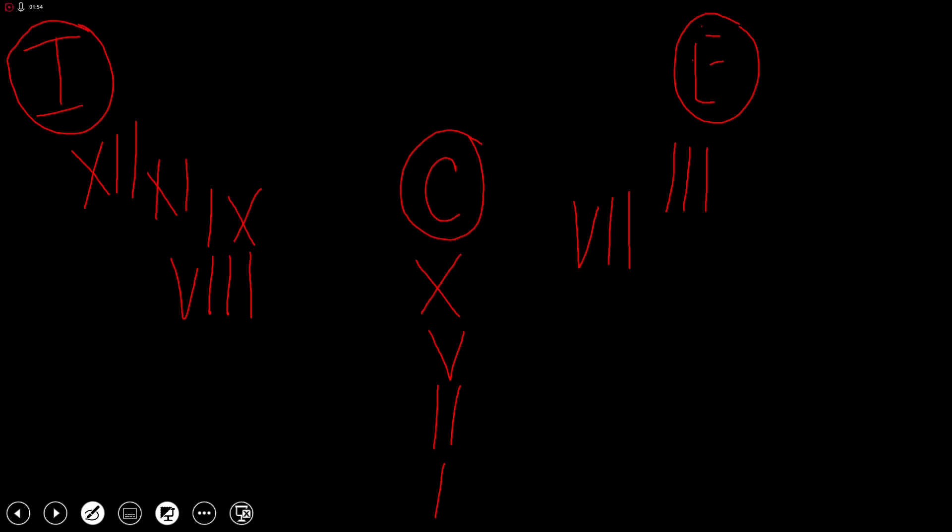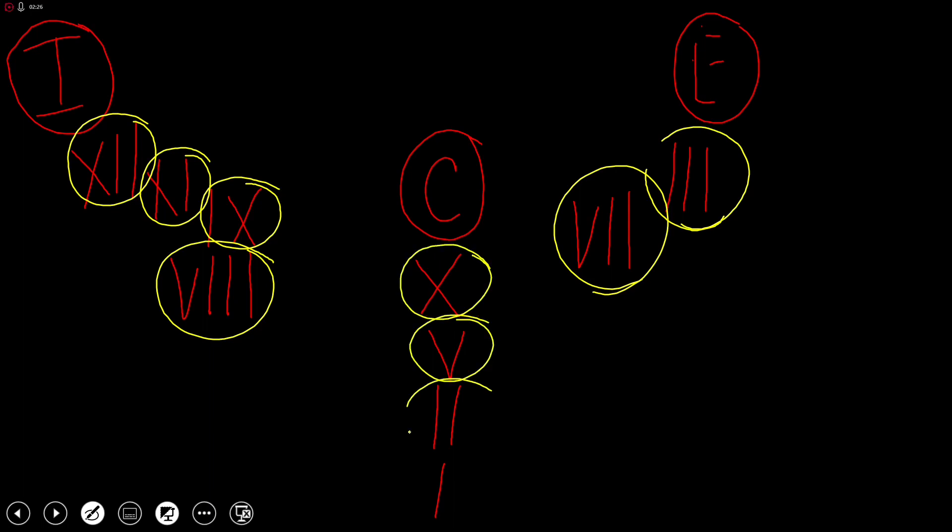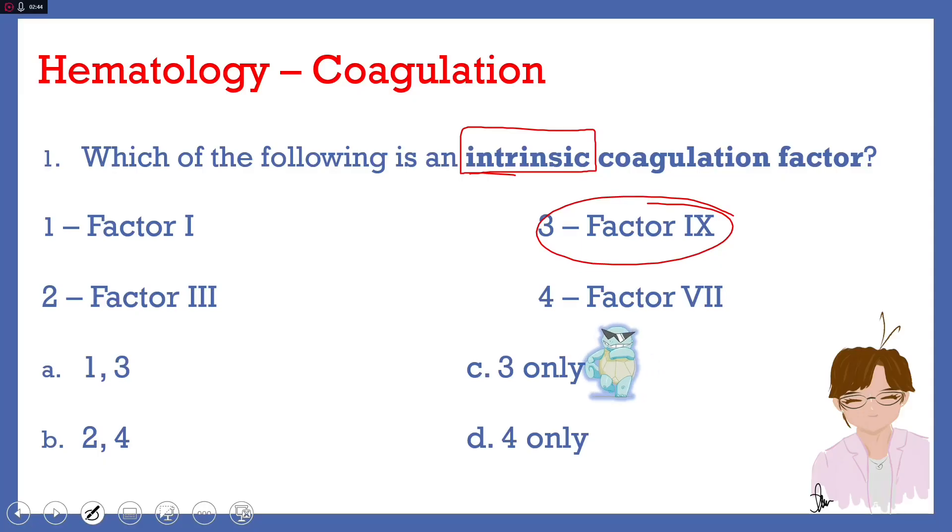We have enumerated the coagulation factors in the pathway they participate in. If they participate in the intrinsic coagulation pathway, then they are known as intrinsic coagulation factors. So let's memorize: intrinsic factors are 12, 11, 9, and 8. The extrinsic factors are factor 3 and factor 7. The common factors are 10, 5, 2, and 1. So again, intrinsic factors 12, 11, 9, 8. Extrinsic factors 3, 7. And common factors 10, 5, 2, and 1.